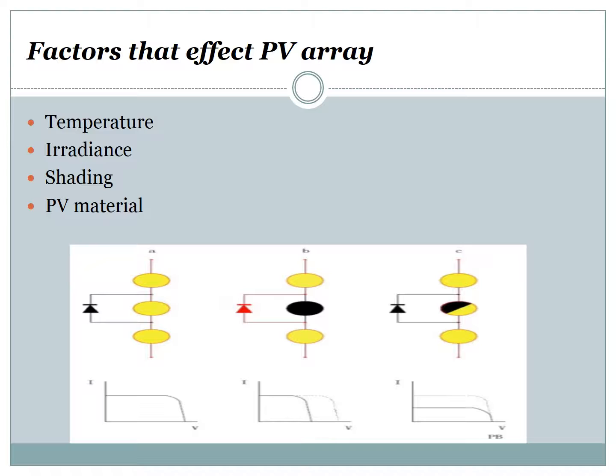The factors that affect the photovoltaic array include temperature, irradiance, shading, and the photovoltaic material itself. In the pictures shown, the first picture shows no shade on the cell and the IV curve is unaffected. In the second picture, full shade on the cell shows an impact on the IV curve. In the third picture, partial shading condition affects the cell and shows its impact on the IV curve.